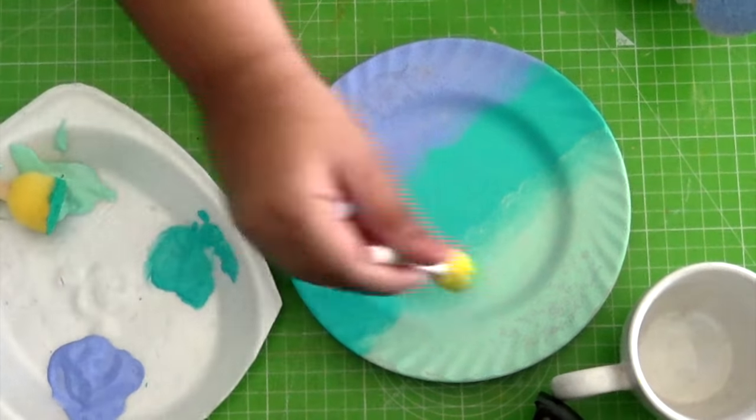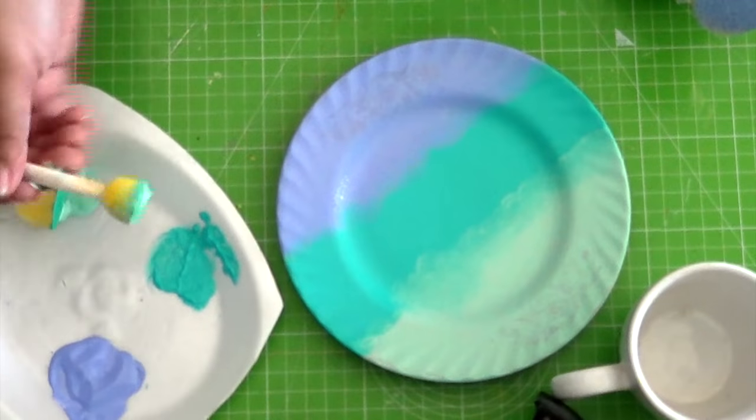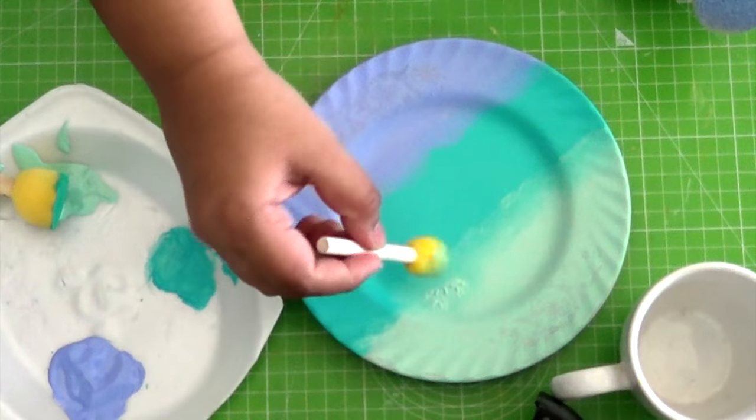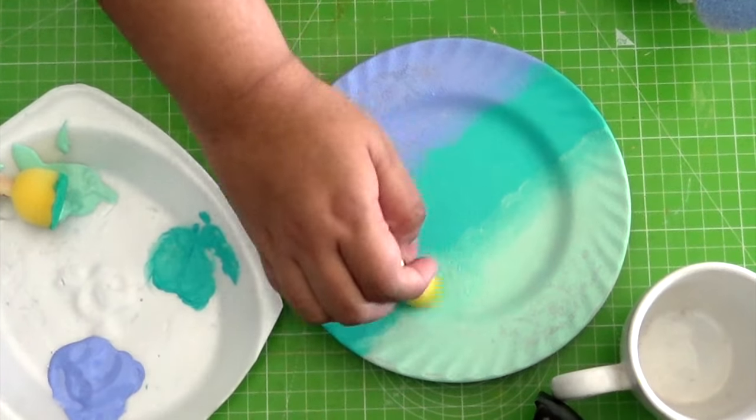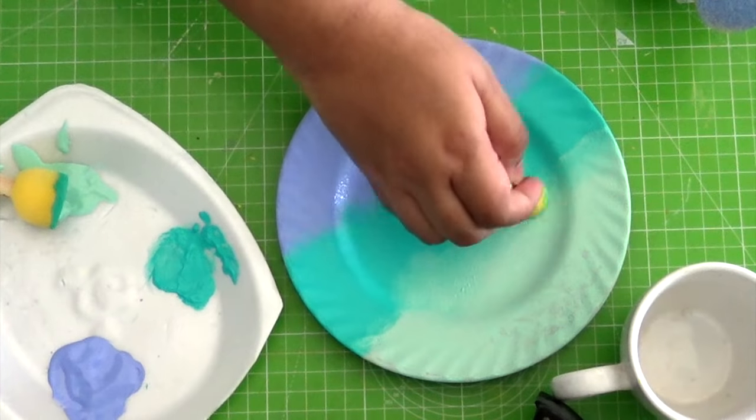Now take the lighter shade and very lightly dab it over the darker shade, and just keep running the sponge along the edge a few times over.